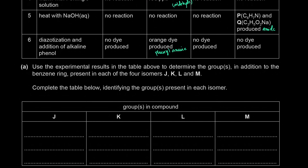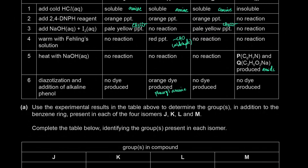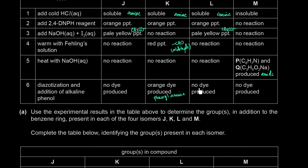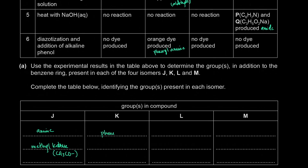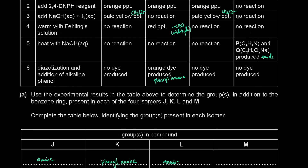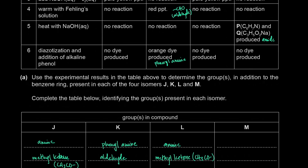To summarize the groups: compound J has an amine and a methyl ketone (CH3CO). Compound L also has an amine and a methyl ketone — the same results as J. Compound K has a phenylamine (not just an amine) and an aldehyde. Compound M has an amide — the only positive test it gave was hydrolysis.